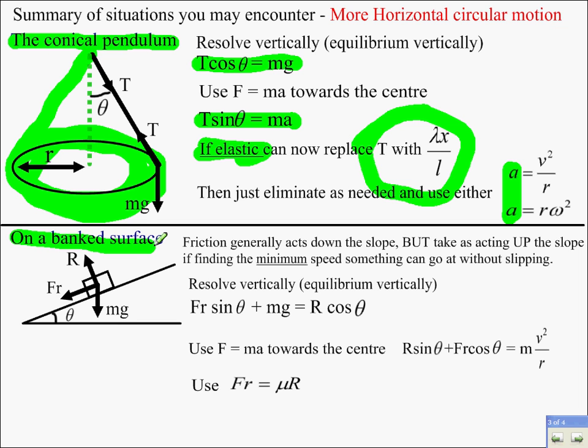Final horizontal situation is where you have a particle on a banked surface. Now, it needs to determine friction. Most questions, it will be acting down the slope because the object will be trying to move up the slope out to break the circle. But, if you're looking at a minimum speed, then the object will be just about to slip down the slope. So, in that case, with minimum speed, the friction will act up the slope to oppose the motion. Again, resolving. You need to be careful here to make sure you can resolve vertically, not parallel perpendicular to the plane because there's components of acceleration towards the centre then.